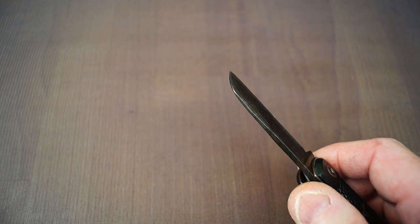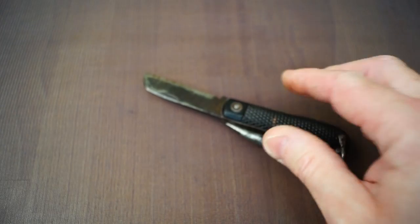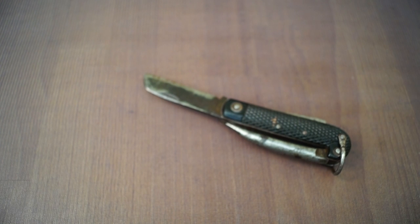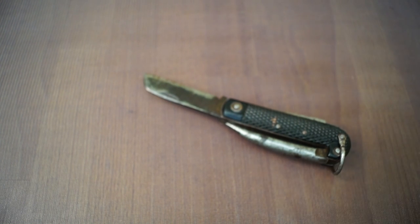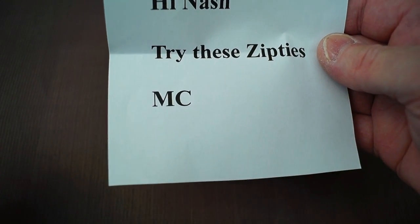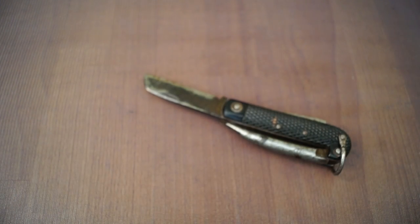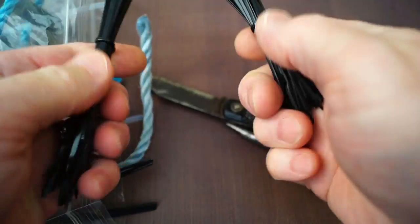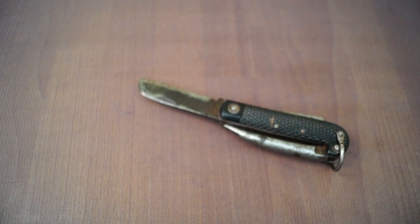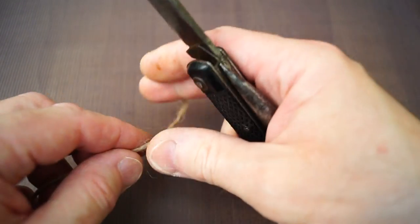Hang on. This is mysterious. There's a note in the Bitsa bag. Better see what it says, I suppose. Hi, Nash. Try these zip ties. MC. Zip ties? What zip ties? Oh, look. Zip ties. Excellent. Thank you very much. Anyway. We'd better start with the garden twine first.